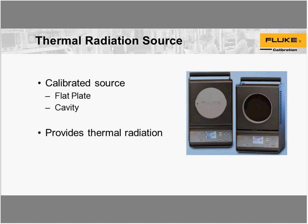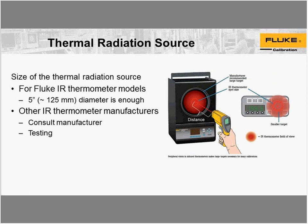The thermal radiation source is calibrated, so it has traceability to the SI. It can be one of the following types: either a flat plate, like we see in the picture on the right end of this slide, or a cavity. The cavity is a device where the blackbody forms a certain shape that is indented into a heat source. The choice of thermal radiation source is that it provides thermal radiation for the calibration — the infrared thermometer is measuring thermal radiation incident upon it, and that's how it determines temperature.